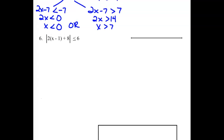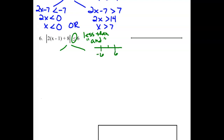Our last question today has everything on the left side inside our absolute value bars, so we can split it right away. We have a less than — these are the 'and' types where we want to be closer than 6 spaces from 0. We can write a connected compound inequality: 2 times x minus 1 plus 8 has to be in between negative 6 and positive 6, greater than or equal to negative 6 and less than or equal to positive 6.